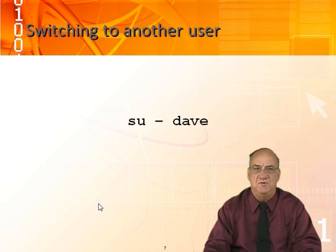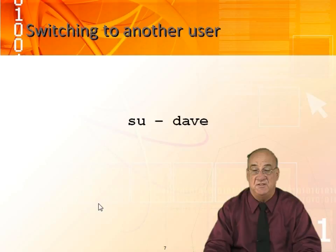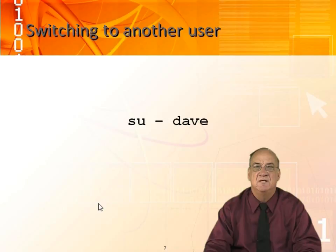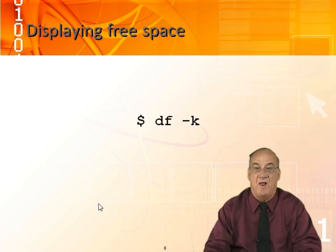To switch to another user, we use the SU command. The minus sign says: take me to that person's home directory and execute his profile. Without the minus sign, it leaves you in the current directory and does not take on that person's environment, so it does not execute his profile. If I don't specify a person, it assumes root. I use SU space minus a lot — I log in as myself, switch to root, do what I have to do, and exit. Being logged in as root is dangerous.